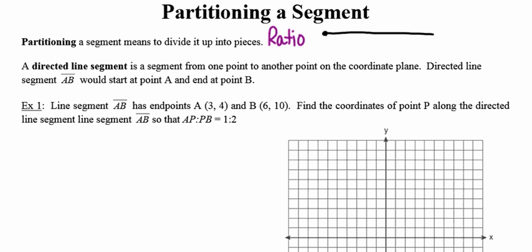Here's what that looks like in picture form. If I divide a line segment up into five different equal pieces, the ratio between the purple line segment and the blue line segment might be two to three. So I've partitioned that whole entire line segment into two pieces such that their ratio is two to three. That's what it means to partition a line segment.